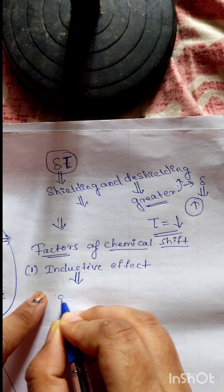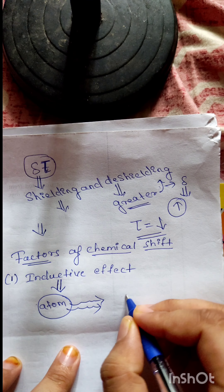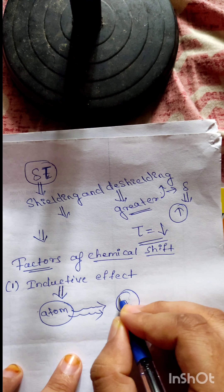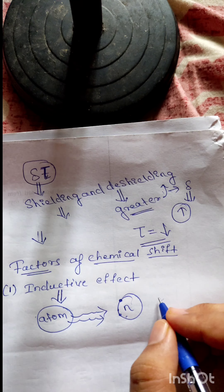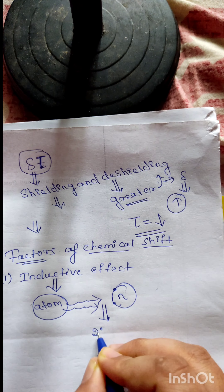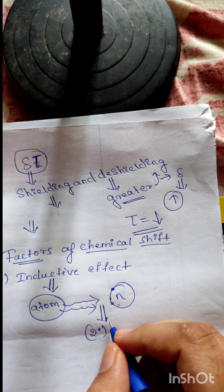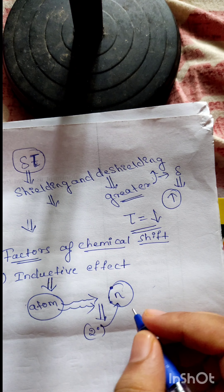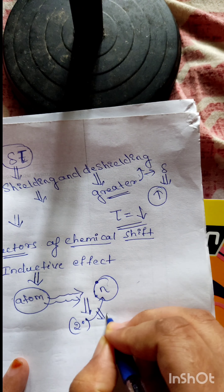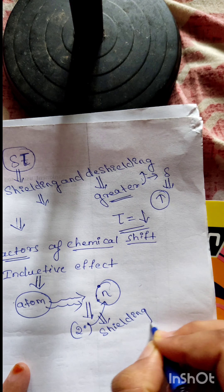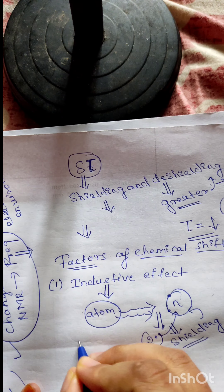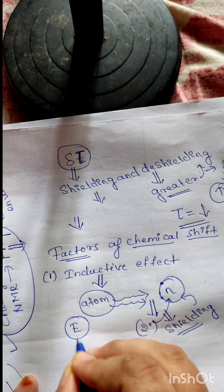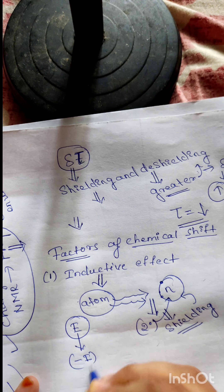When an atom is placed in a uniform magnetic field, the nucleus is surrounded by electrons. This causes the production of a secondary field that is opposed to the applied field of other nuclei — this is called shielding of the nucleus. The electron density is reduced due to the negative inductive effect of neighboring electronegative atoms, so the secondary field decreases and resonance now occurs downfield, giving a high delta value.